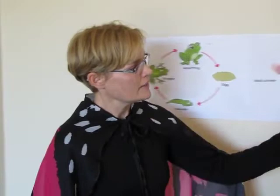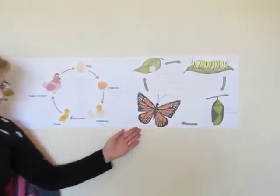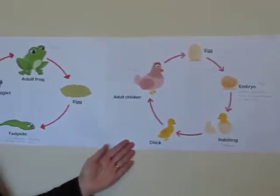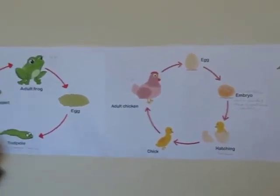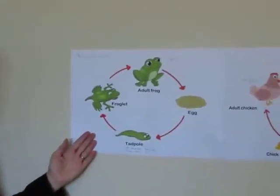Because there are so many different life cycles in our earth, but I'd like to focus just on three. We'll be looking at the life cycle of the butterfly, the life cycle of the chicken, and the life cycle of the frog.